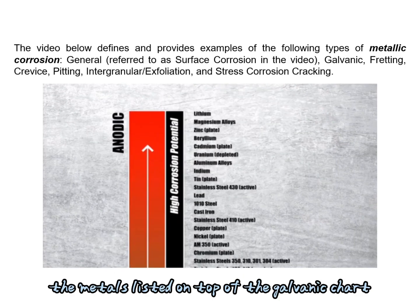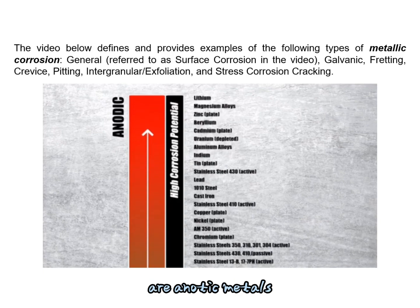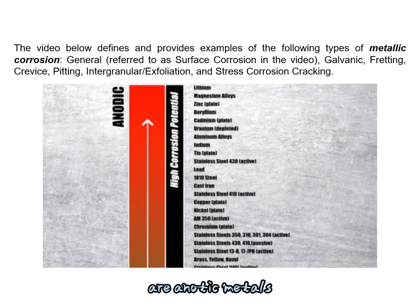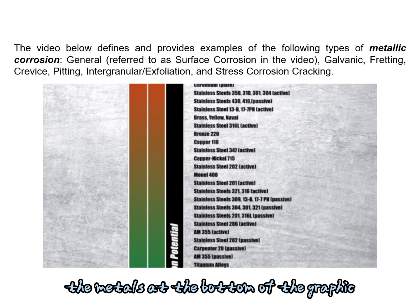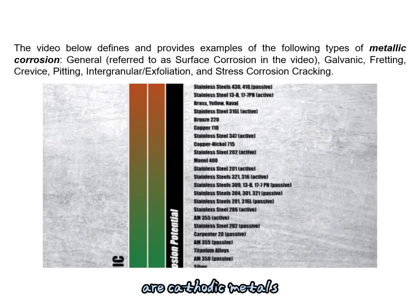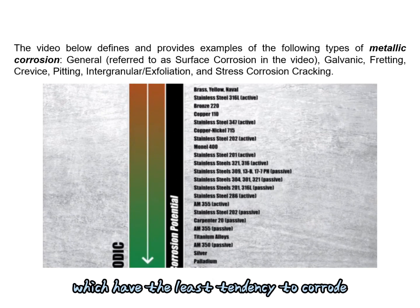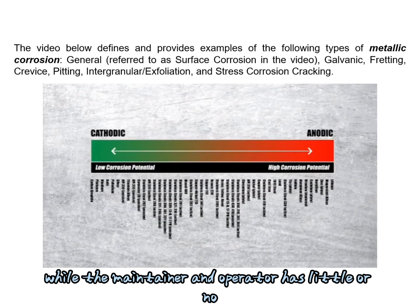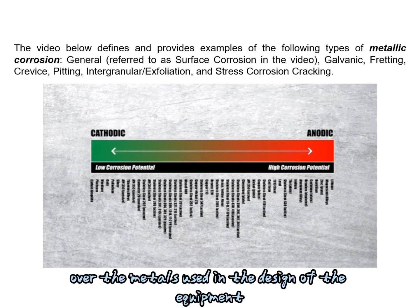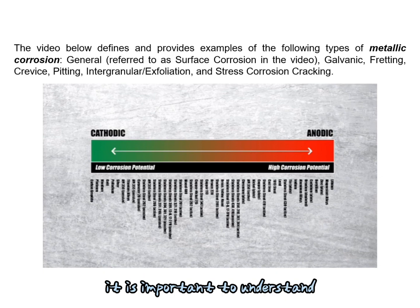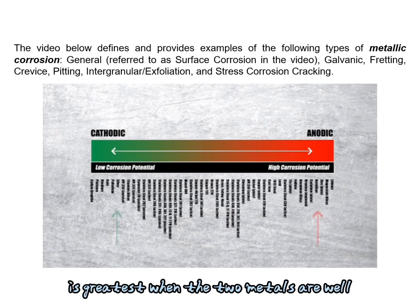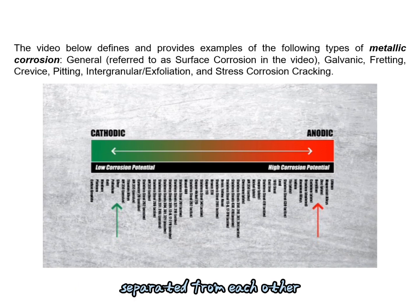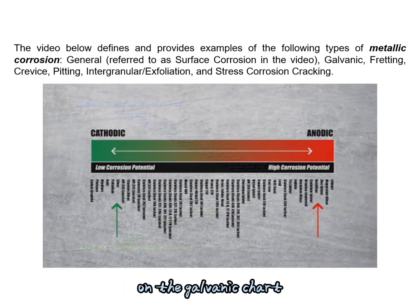The metals listed on top of the galvanic chart are anodic metals, which have the highest tendency to corrode. The metals at the bottom are cathodic metals, which have the least tendency to corrode. While the maintainer and operator has little or no control over the metals used in the design of the equipment, it is important to understand that the potential for galvanic corrosion is greatest when the two metals are well separated from each other on the galvanic chart.